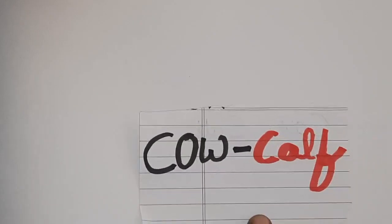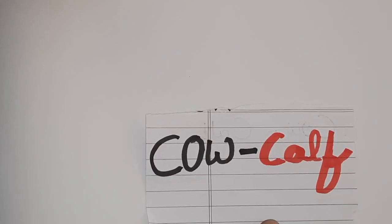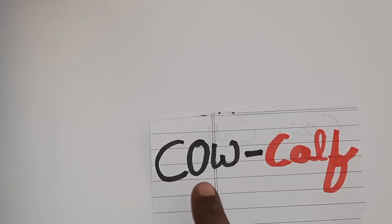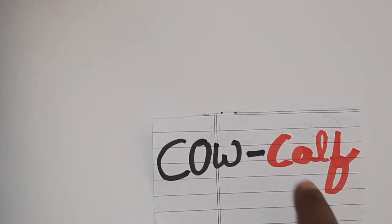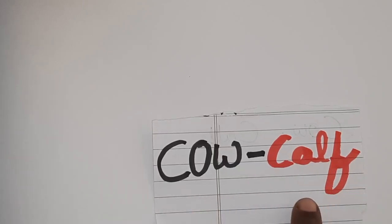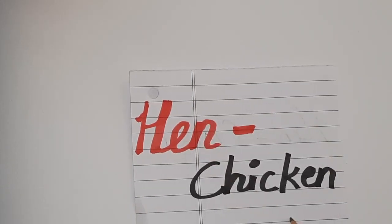So here is the first one. This is a cow, and cow's young one is calf. So cow's young one is calf. The young one of the hen is chicken.